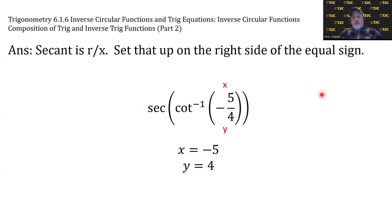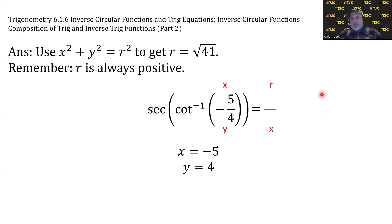Now on the right side, secant is r over x, so we're going to set that up. The outer trig function, we set up its ratio on the right side of the equal sign, and now we've got to figure out what r is. But that's just the Pythagorean theorem. If we set it up with the given x and y, you should get r as the square root of 41. Remember, r is always positive. x and y can be negative dependent upon the quadrant.